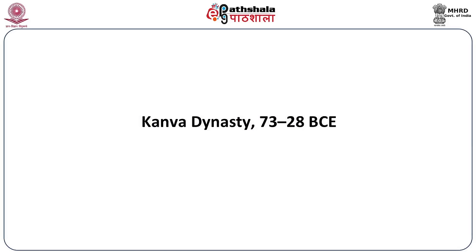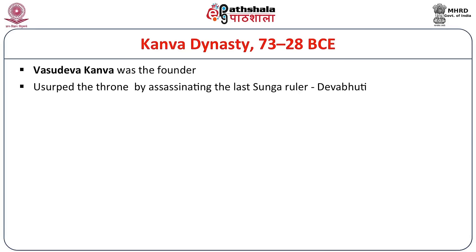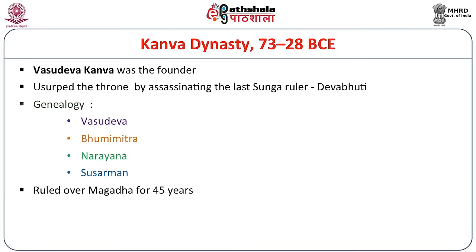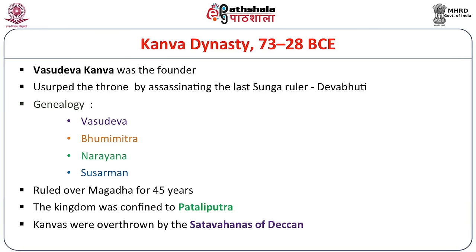Sungas were succeeded by the Kanwa dynasty, who ruled from 73 BCE to 28 BCE. Vasudeva Kanva was the founder; he usurped the throne by assassinating the last Sunga ruler, Devabhuti. There are four rulers in the genealogy: Vasudeva, Bhumimitra, Narayana, and Susharman. They ruled over Magadha for only 45 years, and the kingdom was confined to Pataliputra. The Kanwas were eventually overthrown by the Shatavahanas of the Deccan, losing political importance at the beginning of the first century BCE.